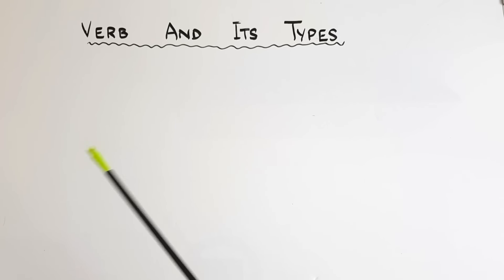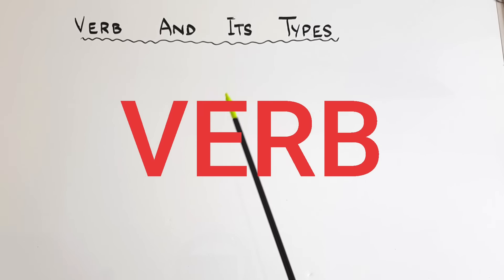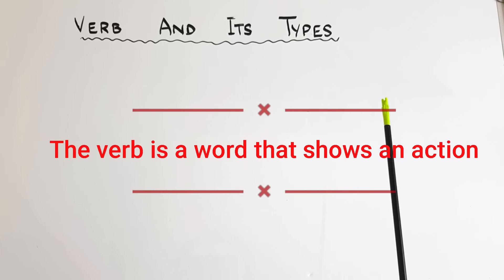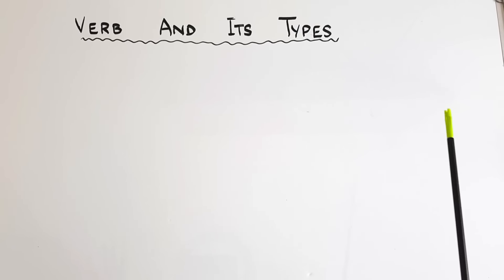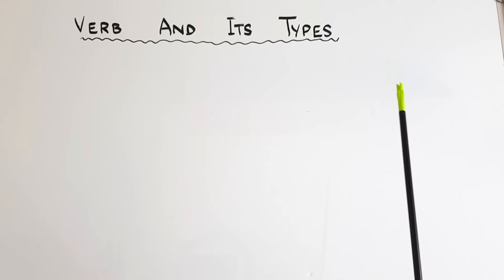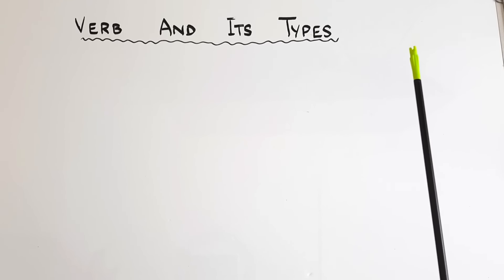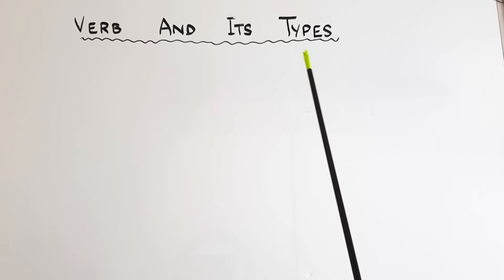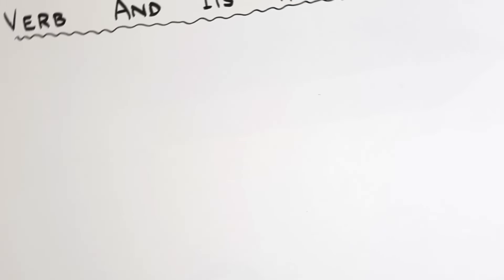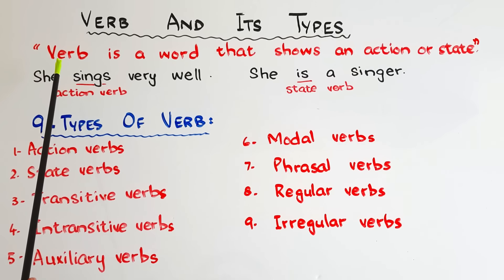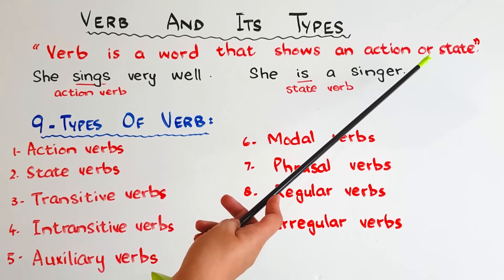Hi there, welcome to Homeschooling with Hira. Hope everyone is well. The term 'verb' must be quite familiar to you, but if you know only this definition — that a verb is a word that shows an action — then this video is for you. This definition of verb is valid only till kindergarten. The full definition is: a verb is a word that shows an action or state.